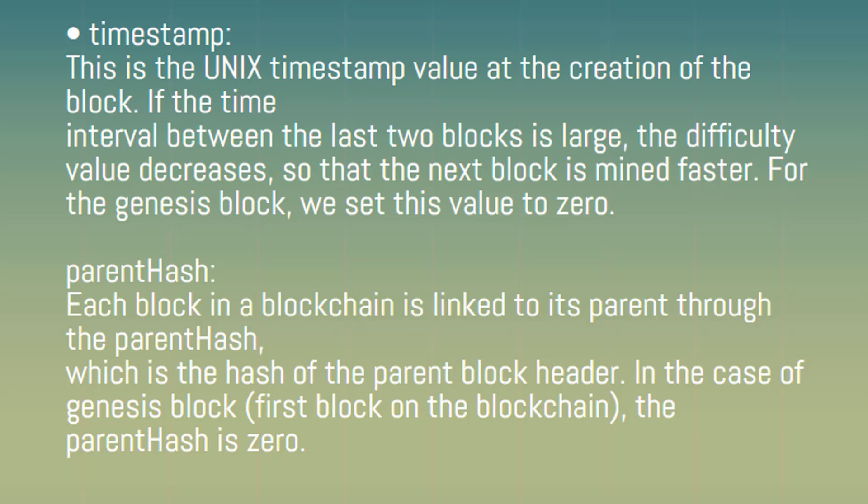Parent hash: Each block in a blockchain is linked to its parent through the parent hash, which is the hash of the parent block header. In the case of the Genesis block — the first block on the blockchain — the parent hash is 0. Extra data: Optional 32-byte extra data can be provided in the Genesis block.